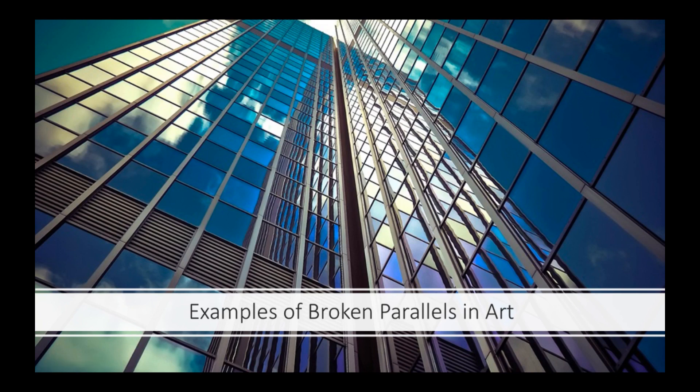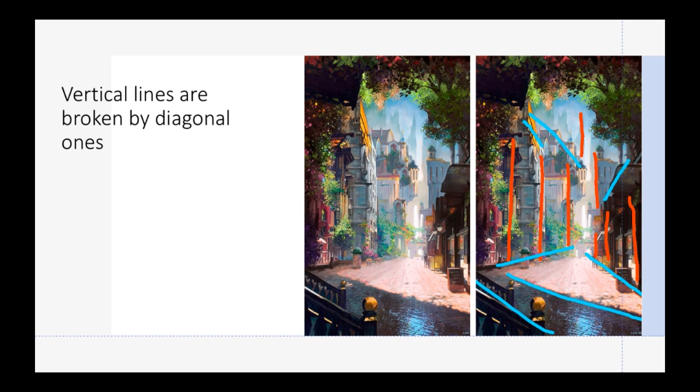Here are some examples of broken parallels in art. Vertical lines are broken by diagonal ones. So you see all these vertical lines here that kind of guide you and then these diagonal shadows and this thing in the foreground and then there's some other ones that will just break that down to create a more interesting image. Basically, this is the focal point. Everything kind of directs to it in that sense.